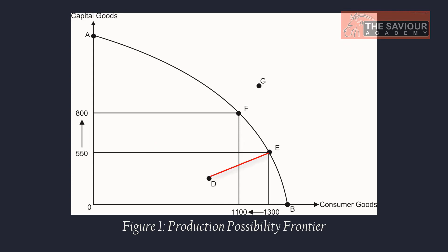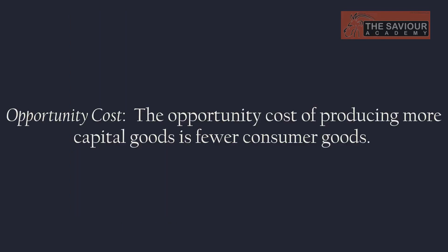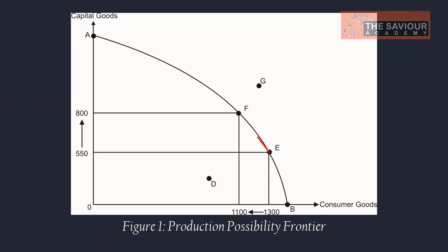Moving from D to E is possible because resources are not fully employed at point D or are not being used efficiently. The PPF also illustrates opportunity cost. The opportunity cost of producing more capital goods is fewer consumer goods. Moving from point E to point F, the number of capital goods increases from 550 to 800 — that is 250 units — but the number of consumer goods decreases from 1,300 to 1,000.